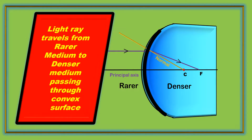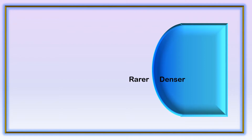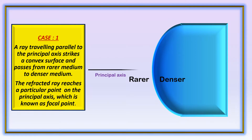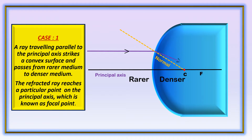Let us start the topic. The ray travels from rarer medium to denser medium, convex surface, principle axis. Case 1: A ray traveling parallel to the principle axis strikes a convex surface and passes from rarer medium to denser medium. The refracted ray reaches a particular point on the principle axis, which is known as the focal point. A ray parallel to the axis reaches the principle axis at the focal point.